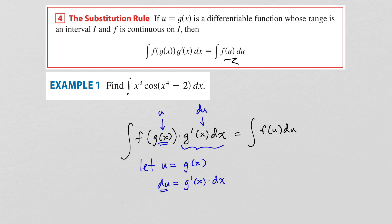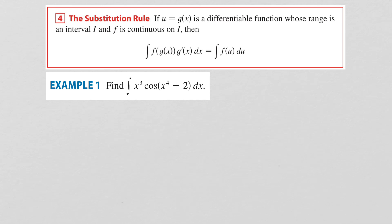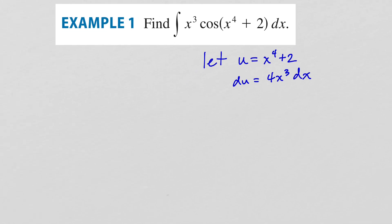Let's look at this example: the integral of x cubed times cosine of the quantity x to the fourth plus two. This is a rather complicated function. We do know how to integrate cosine when it's by itself, so let's try to simplify by letting u equal x to the fourth power plus two. Then du will be 4x cubed times dx.